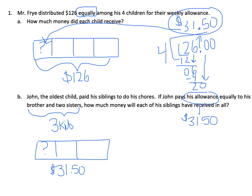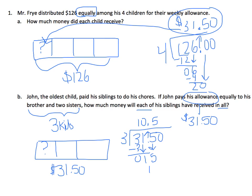To figure out how much each sibling will receive in all, I first need to figure out how much they'll receive from John. So I'm dividing $31.50 by three. Three goes into three once; subtract three, nothing left over, bring down the one. Three cannot go into one, so I put a zero in my answer and bring down the five — but I can't forget about the decimal. Three goes into 15 five times; nothing left. Because it's money, I bring my zero up. Each of the kids from John will receive $10.50.